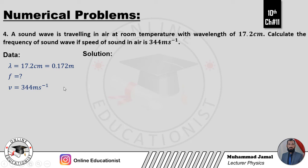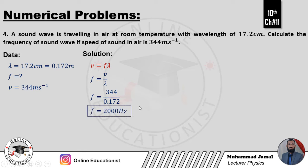Solution start karte hain. V equal to f times lambda formula use karenge — velocity, frequency aur wavelength ka relation. Frequency find karni hai to f equal to V over lambda. Values put karte hain: f equal to 344 divided by 0.172. Frequency hmare paas aayegi 2000 Hz.